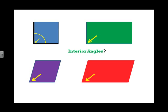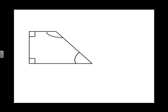In fact, all quadrilaterals have four interior angles located at the vertex. See? This shape here is also a quadrilateral. It has four sides and four interior angles.